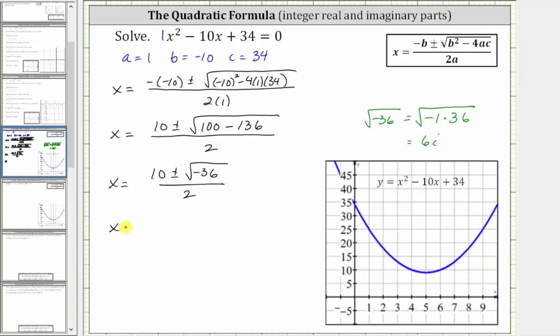which gives us x equals 10 plus or minus six i, all divided by two. To simplify, let's break this up into two separate fractions,